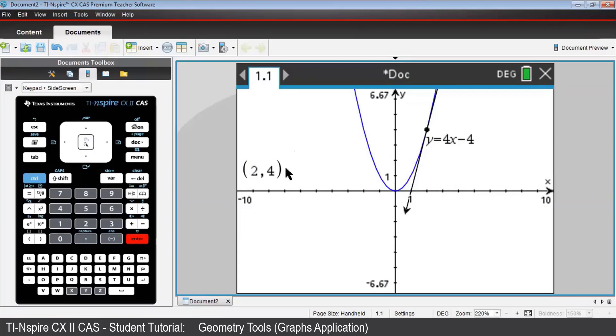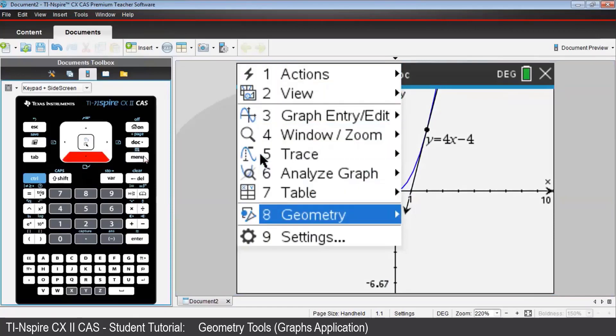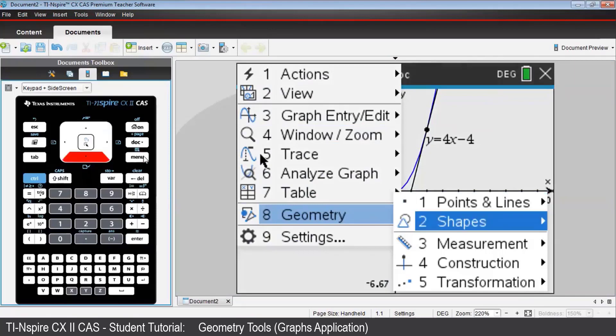Now how about the normal line at that point? That is, many of you know, the line which is perpendicular to the tangent line, at the point of tangency. From the menu, select Geometry, then Construction, then Perpendicular. Once again, an icon appears in the upper left corner.